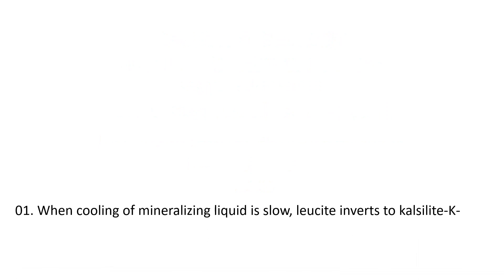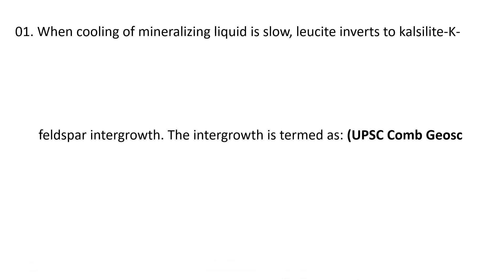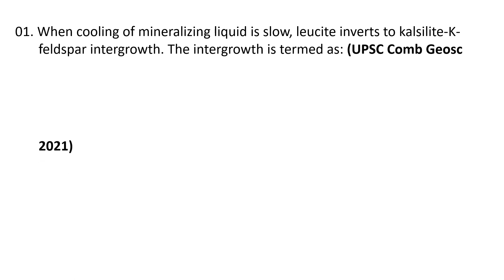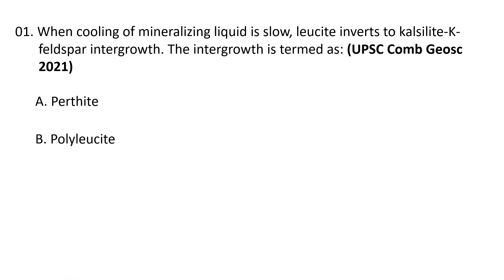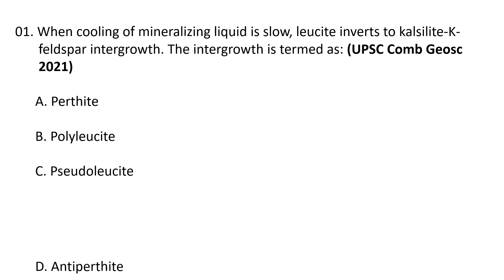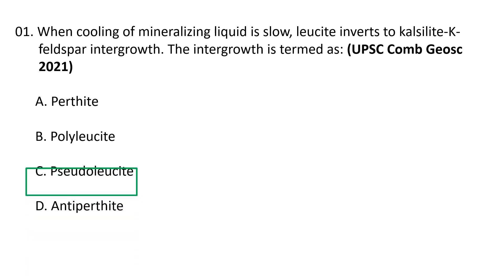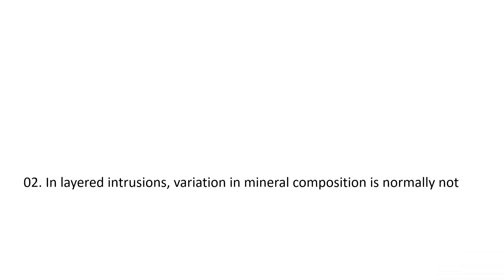Question 1: When cooling of mineralizing liquid is slow, leucite inverts to calcilite-potash feldspar intergrowth. The intergrowth is termed as: (a) perthite, (b) polyleucite, (c) pseudoleucite, or (d) antiperthite. The correct option is C — pseudoleucite. Pseudoleucite refers to an intergrowth of nepheline and potash feldspar within leucite crystals. Bowen and Elstad in 1937 explained the genesis of pseudoleucite with reference to the system nepheline-calcilite-SiO₂.